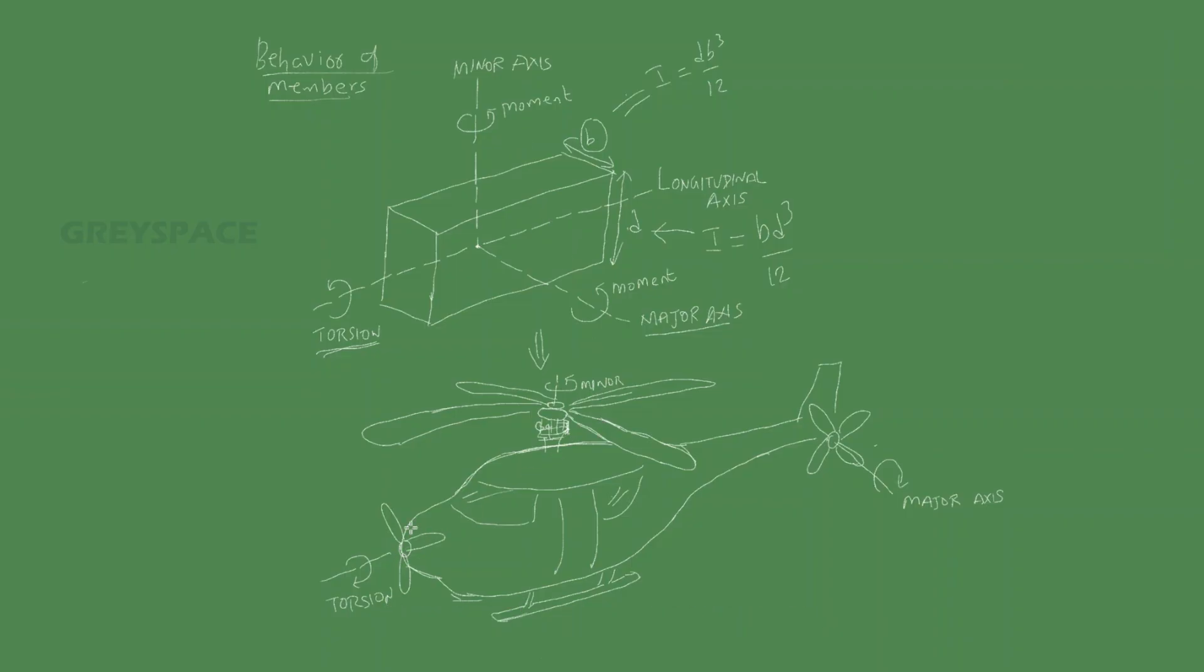The third one is the fan which is rotating about an axis which is passing through the length of the helicopter, which is nothing but the longitudinal axis. In this way we can remember this concept. Thank you.